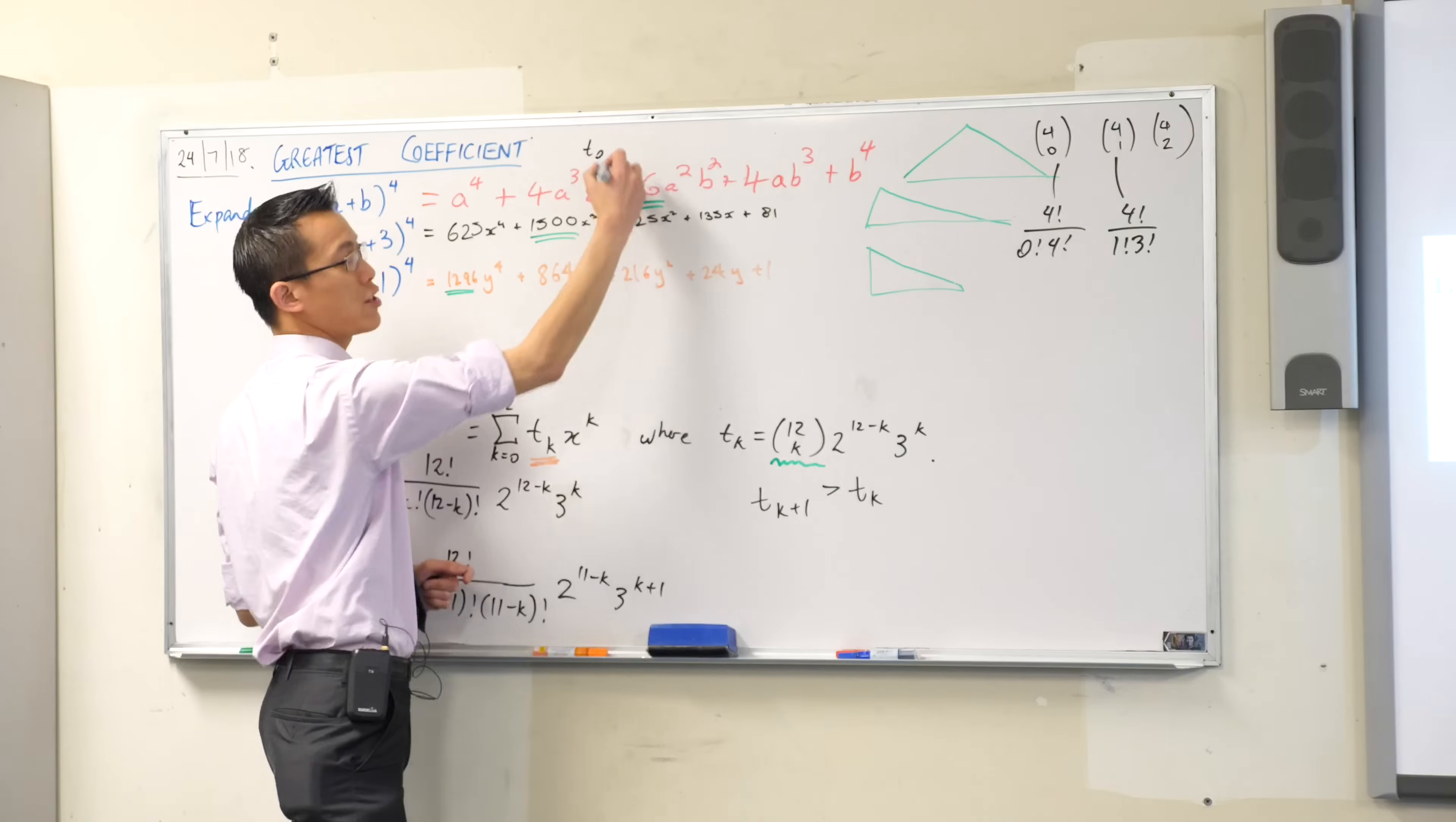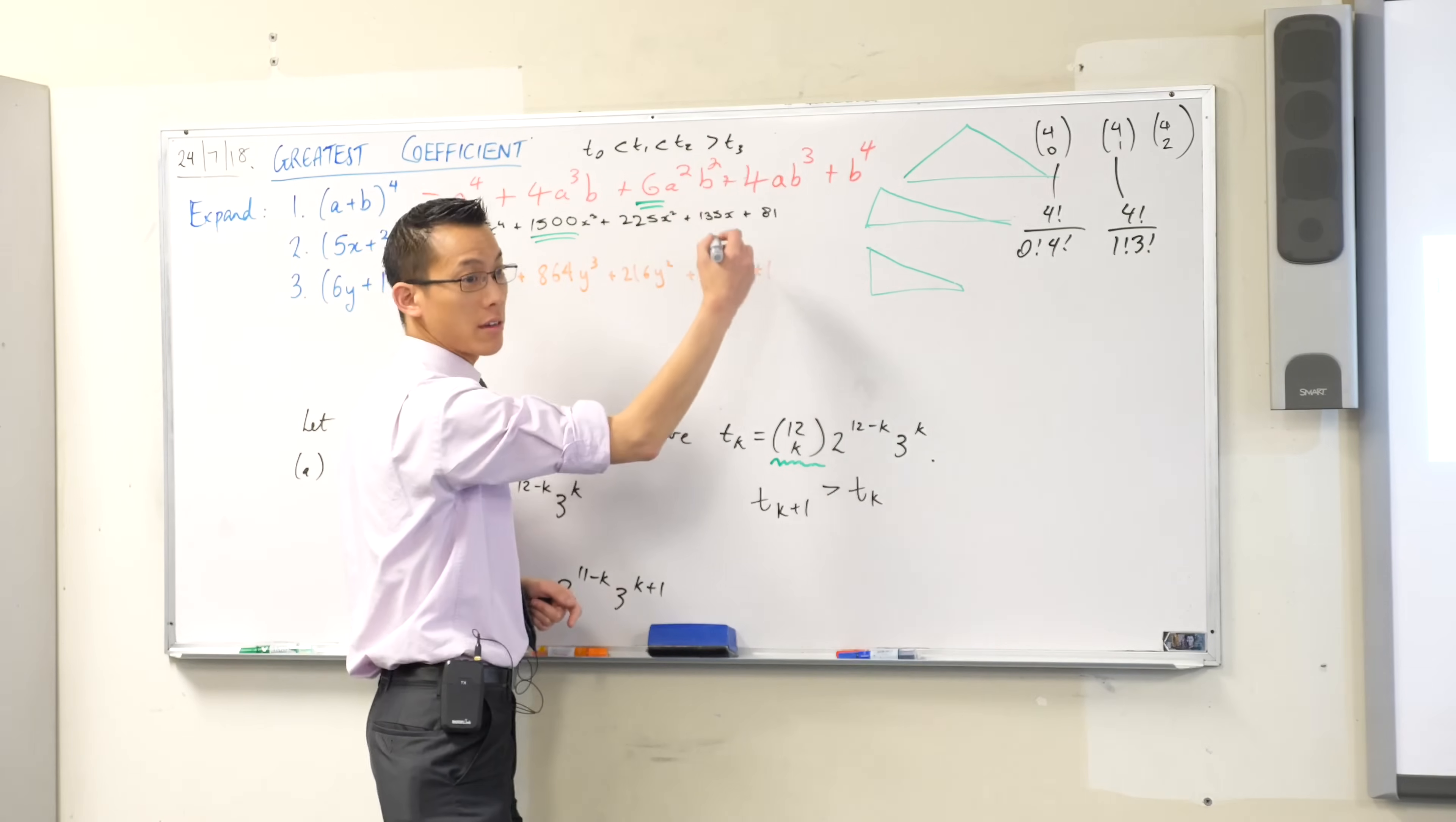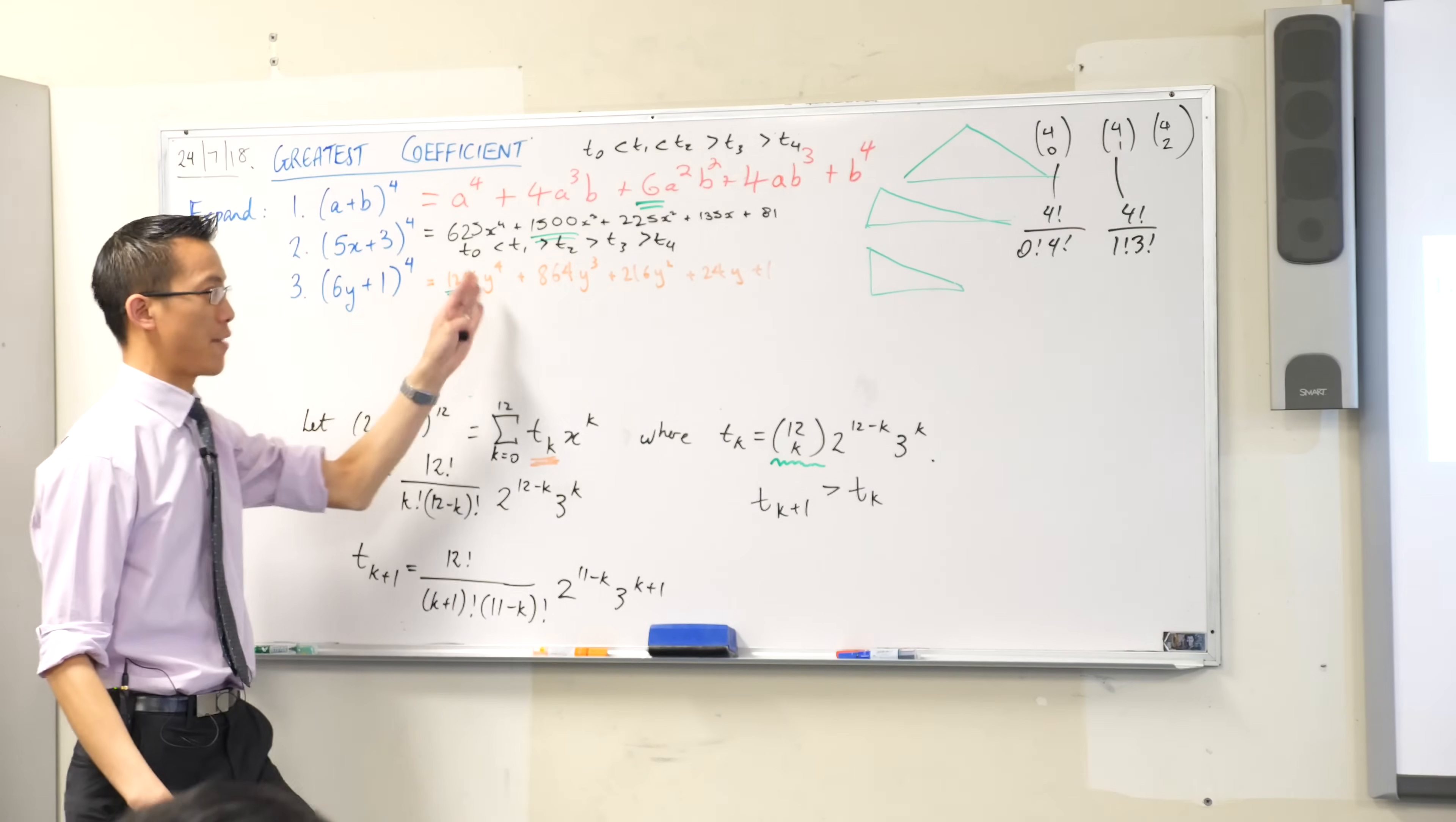For example here, if we call this t0, t1, t2, t3, t4, I can write for this first line t0 is smaller than t1, and that's smaller than t2, but then at that point, this is t2 right in the middle, I know it's a bit funny because you start counting from zero. After that it doesn't get bigger anymore. So t2 is bigger than t3, which is bigger than t4.